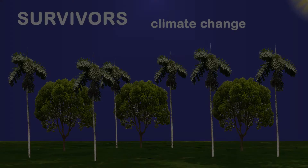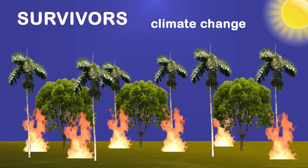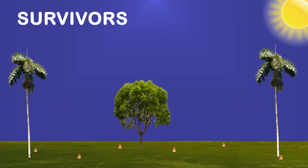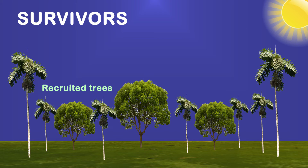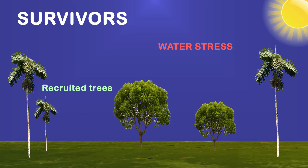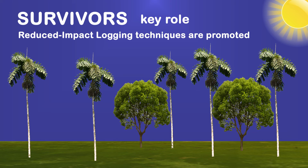As climate change continues, we can also expect to see increases in droughts and fires that will further disturb Amazonian forests. Betting on newly recruited trees to store carbon in some of the forests disturbed by logging might be a risky gamble, as most of them are pioneer trees highly vulnerable to water stress. Trees that survive logging activities may therefore be more reliable in accumulating carbon in these disturbed forests.